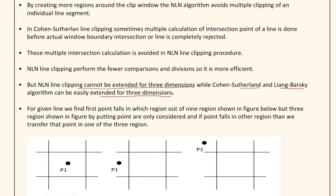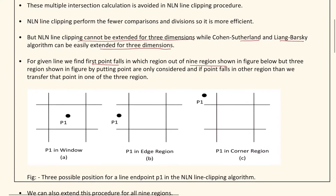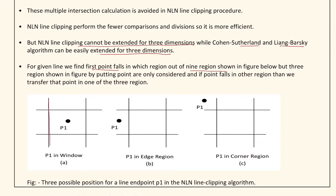For a given line, we first find which region the point falls in, out of nine regions shown in the figure. The regions shown in the figure are the only ones considered. If a point falls in another region, we transfer that point into one of three regions. In figure (a) P1 is in the window, in figure (b) P1 is in an edge region, and P1 can also be in a corner region.